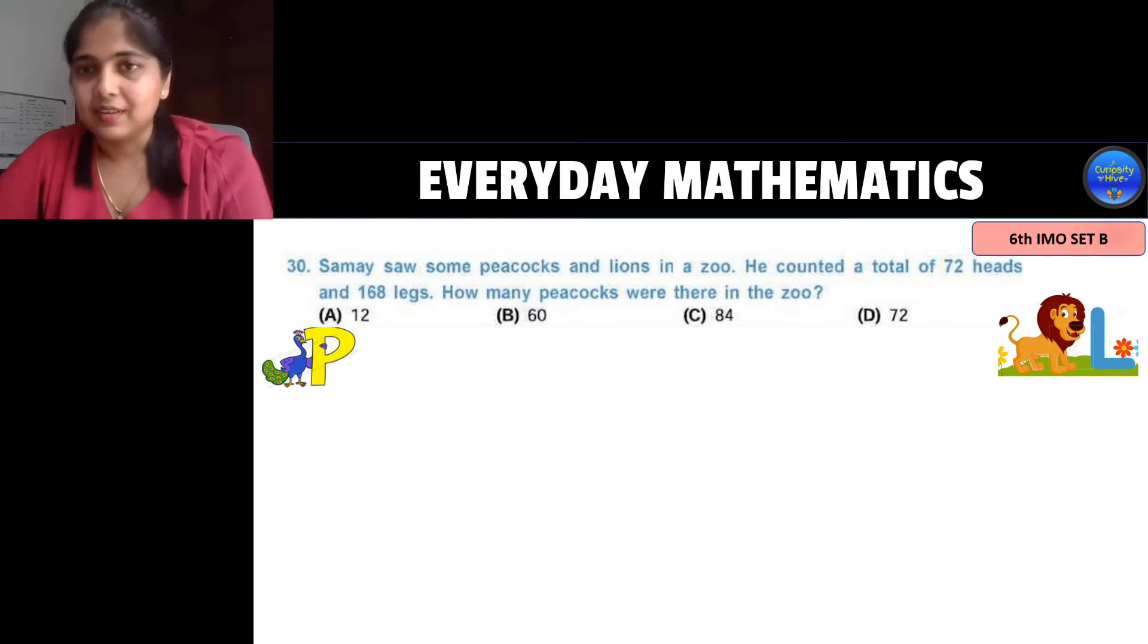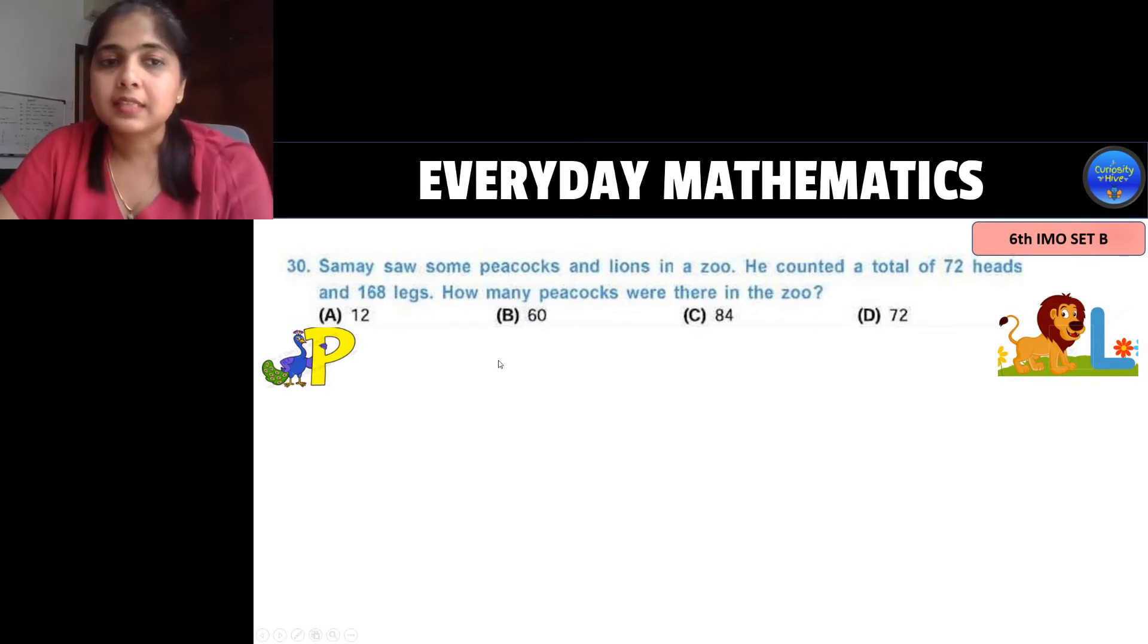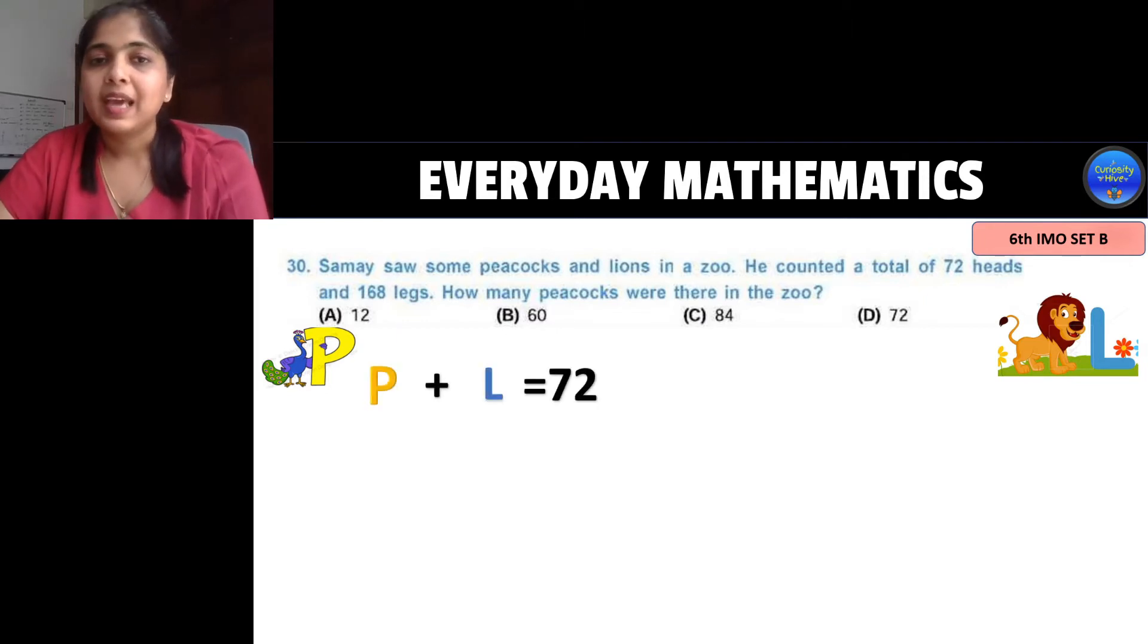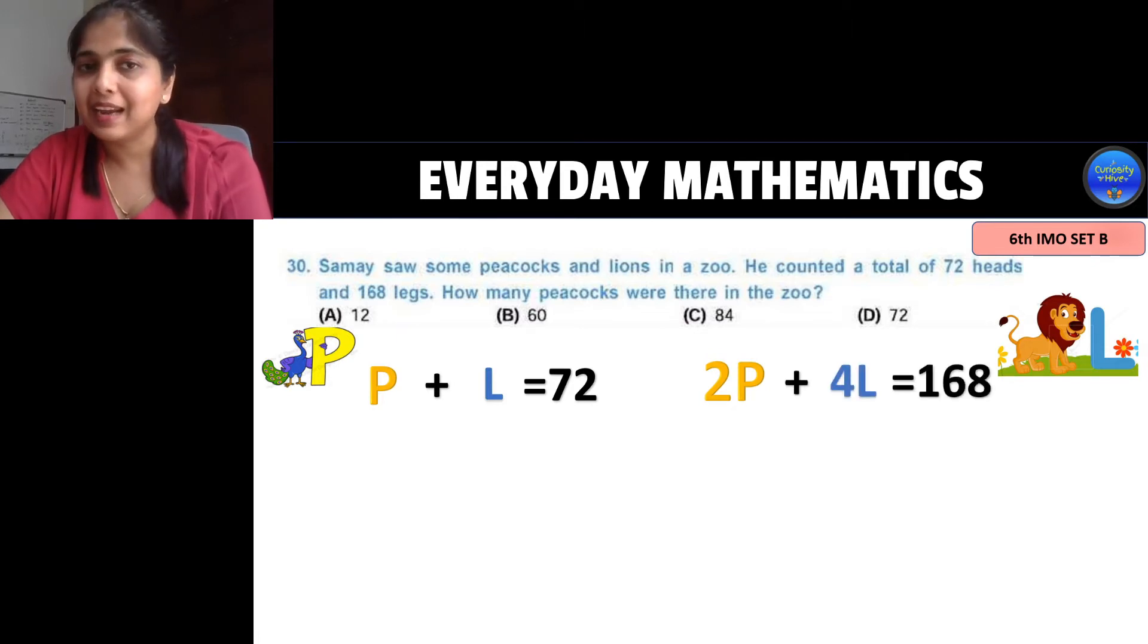This is an interesting question. Now it says that Samay saw some peacocks and lions in a zoo. He counted a total of 72 heads. Let's stop there. 72 heads means the sum of peacock and lion was equal to 72. And then he also counted 168 legs. Now peacock has 2 legs and lion has 4 legs. That means 2 times peacock plus 4 times lion is equal to 168. So we have these two equations here.